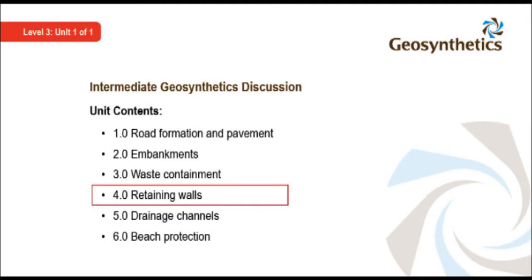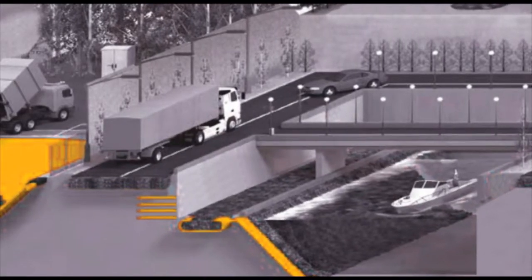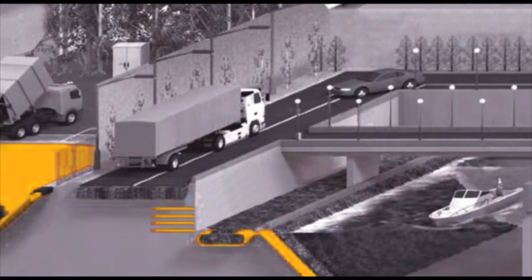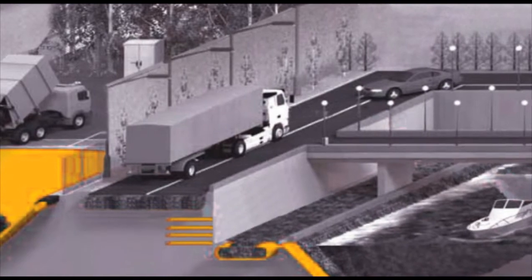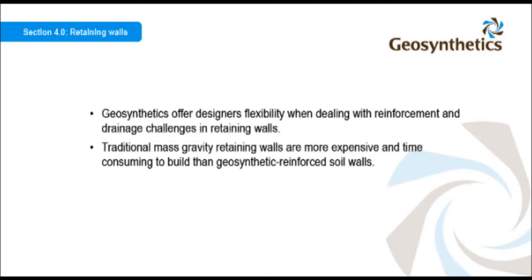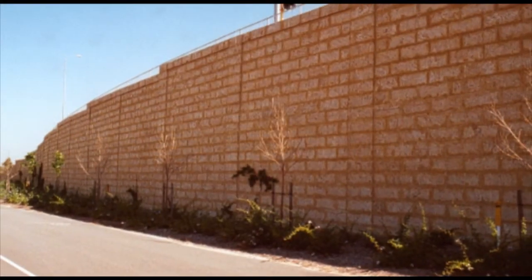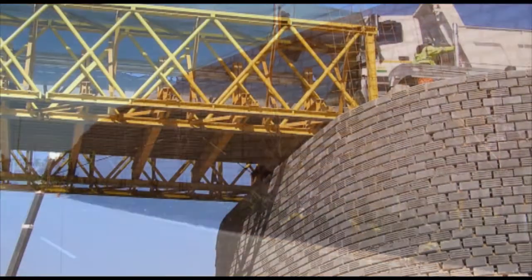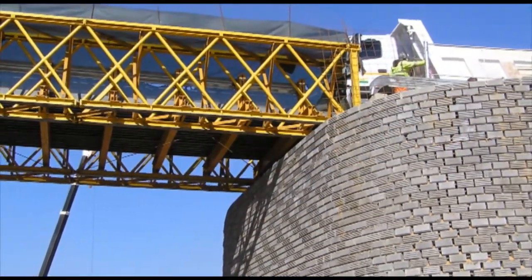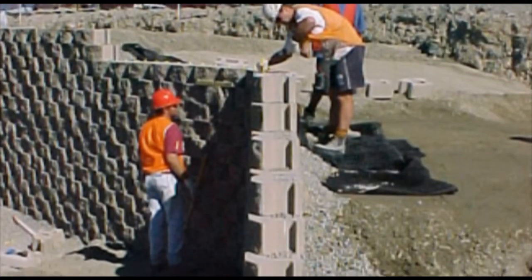Geosynthetic products are a critical yet hidden component of many retaining walls. Retaining walls that make use of geosynthetics can be built in quite confined spaces and withstand very heavy loads. Geosynthetics offer designer flexibility when dealing with reinforcement and drainage challenges in retaining walls. Traditional mass gravity retaining walls are more expensive and time consuming to build than geosynthetic reinforced soil walls. A variety of different face materials can be used, including segmental blocks, precast concrete panels and gabions. Retaining walls are used widely in road projects, such as around bridge abutments.